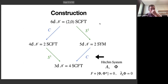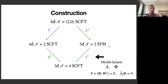To understand these theories, one can start with the 6D theory, compactify on a curve C to get a 4D N=2 theory, then further compactify on a circle to get a 3D N=4 SCFT. Alternatively, first compactify on the circle to get 5D N=2 Super Yang-Mills, then compactify on the Riemann surface to 3D. Everything for the 4D theory can be encoded in a Hitchin system on C, depending on a gauge field A and a (1,0)-form φ satisfying Hitchin's equations.